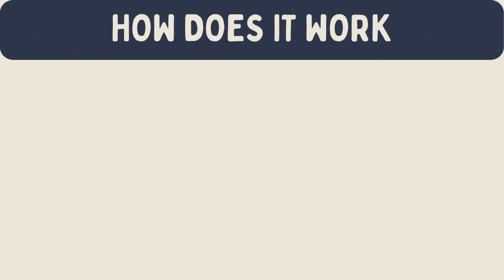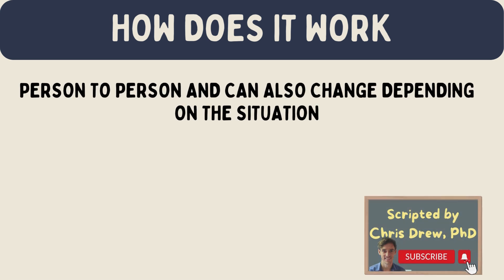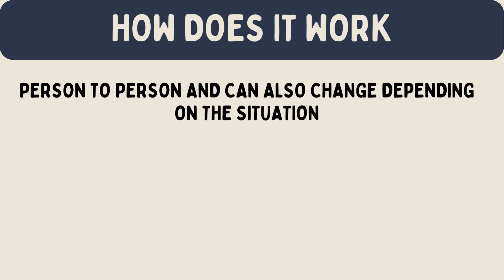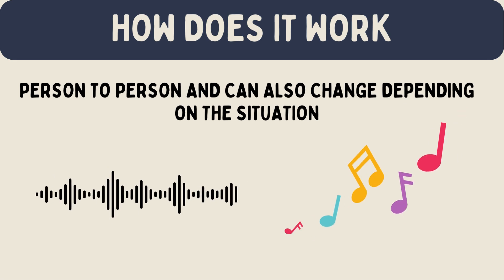How does absolute threshold work? The absolute threshold varies from person to person, and it can also change depending on the situation. For instance, in a very quiet room you might hear a soft whisper, but you might not hear the same whisper in a noisy place.